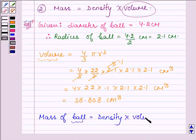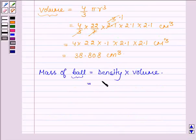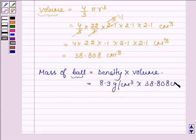And this is equal to density is given to us as 8.9 grams per cm³ into volume of 38.808 cm³.